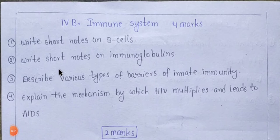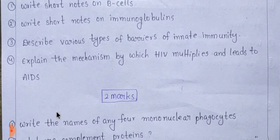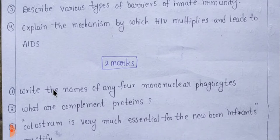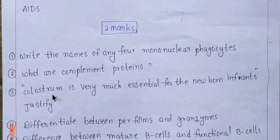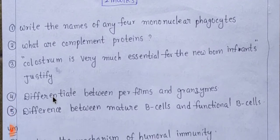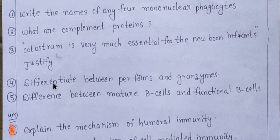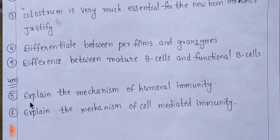Here we have unit 4B with 4-mark questions. Next, 2-mark questions are displayed — first, second, and third. Then the fourth and fifth. The first question carries 4 marks, here we also have 4 marks, and here we have 2 marks. If you have 2 marks, the paper would be tough — this preparation is better.